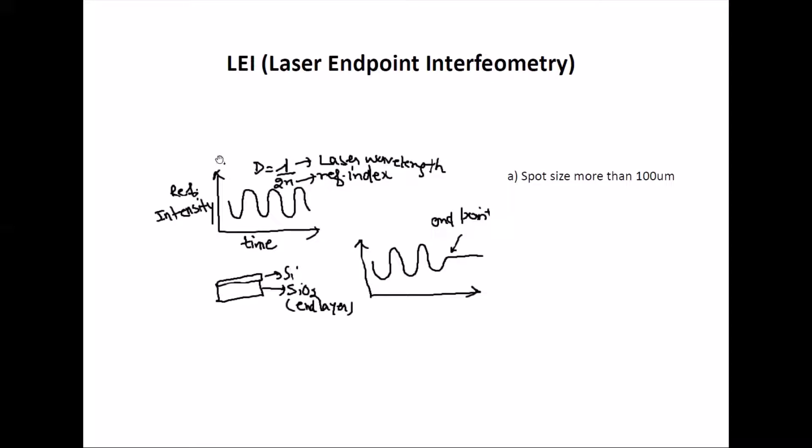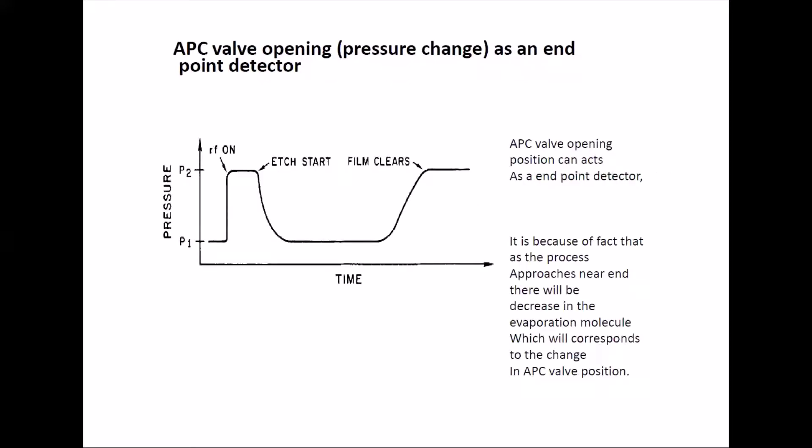You can measure the thickness just by looking at how much you are etching per minute. If you know the refractive index of your material being etched and the wavelength of laser is always known, you can measure your endpoint. The drawback here is your laser spot size is probably 100 microns diameter, so the area should be more than 100 microns at least. 300 microns is a good number.